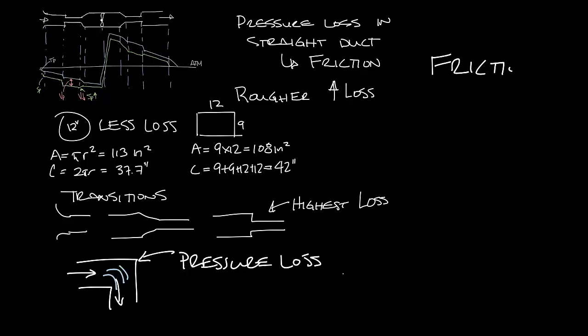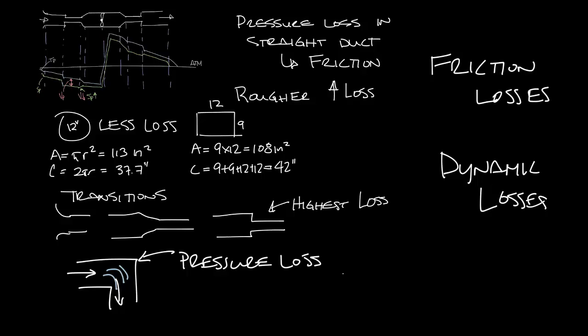These pressure losses fall into two categories. Frictional losses caused by air moving through the ductwork and dynamic losses caused by disturbances of the airflow from changes in direction or area. So these top ones would be friction losses and the bottom ones would be dynamic losses.